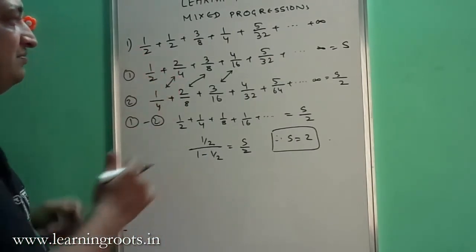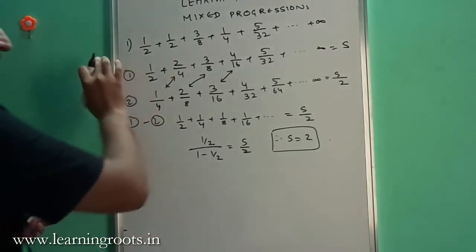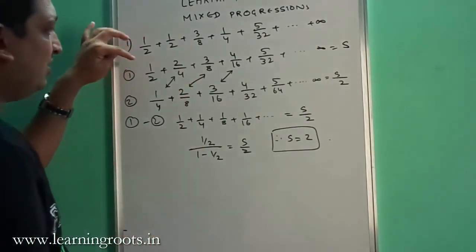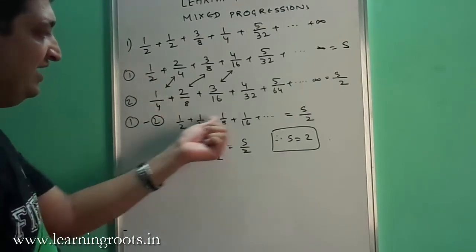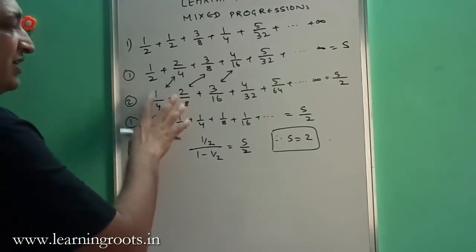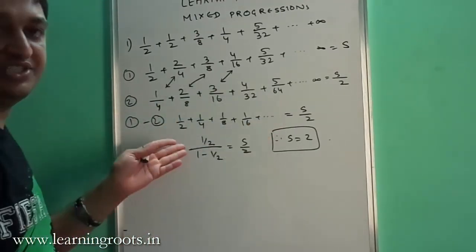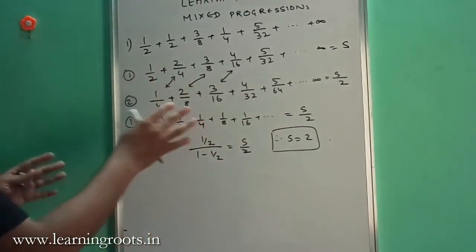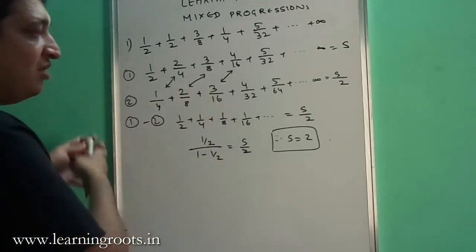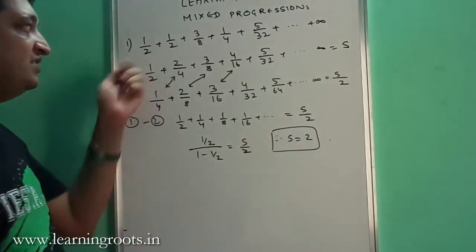In case of an arithmetic and geometric progression being combined, you can simply take the common ratio, multiply both sides by it, and then subtract. Here because the common difference is 1, the entire progression came out to be 1/2 plus 1/4 plus 1/8 and so on. In case the common difference was 2 or 3 or 4, that factor would come out and you would get the same progression. So for a combination of AP and GP: multiply by the common ratio, subtract, remove the common term, and find the value of S.